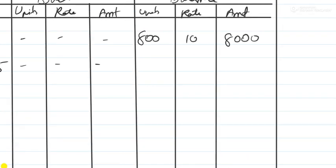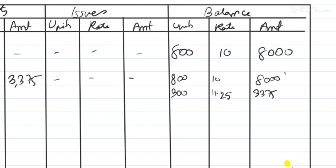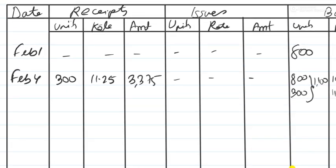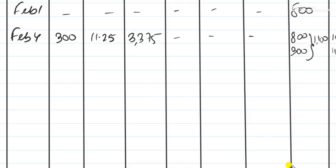After the Feb 4 purchase, the balance is 800 units at 10 rupees (8000) and 300 units at 11.25 (3375), totalling 1100 units worth 11,375. Now the real part of the sum comes in — on February 10, issues were made of 1000 units.